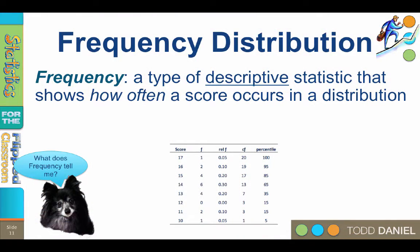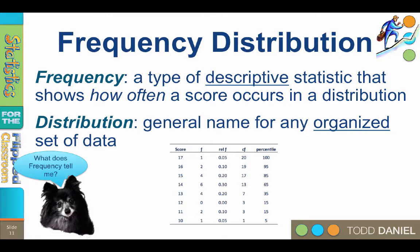Frequency is a type of descriptive statistic that organizes data into a distribution. A distribution is the general name for any organized set of data.